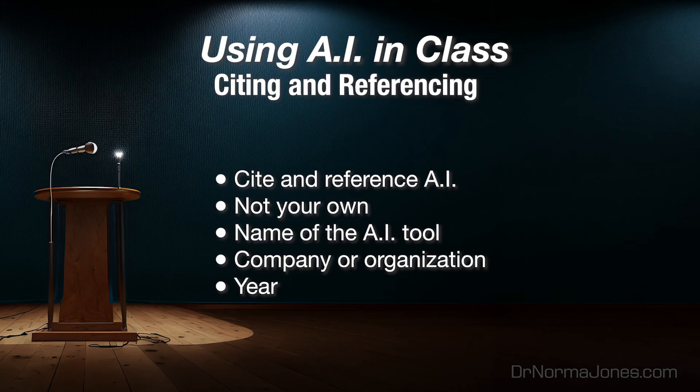Citing and referencing. Lastly, it is vital that you cite and reference information that you receive from AI. Remember, AI-generated works are not your own, so you must cite and reference them to avoid plagiarism in class. You must also do this outside of class to avoid being perceived as a fraud. The citation and reference should include the name of the AI tool, the company or organization that created it, and the year the reference was generated. Please check with your instructor for specific style details.